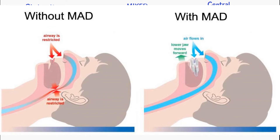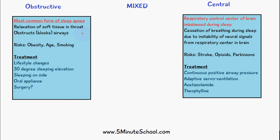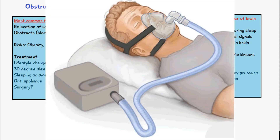Surgery to remove excessive soft tissue can also be done. Something that can be used for both obstructive sleep apnea and central sleep apnea is continuous positive airway pressure (CPAP).